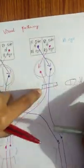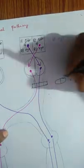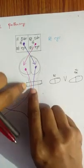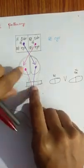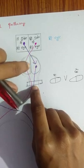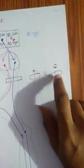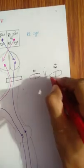Lesions are determined by the visual fields of the right eye and the left eye. Here is the nasal side and here is the temporal side. Optic nerve lesion: right eye vision is impaired — both nasal side and temporal side of the right eye are lost.